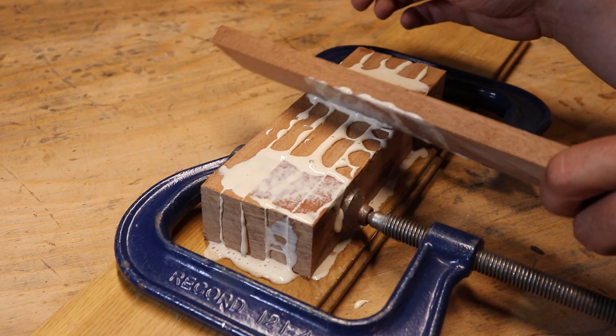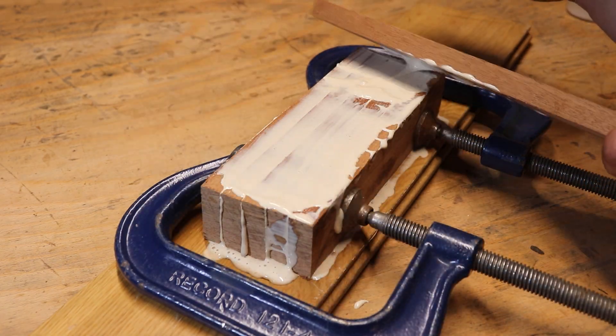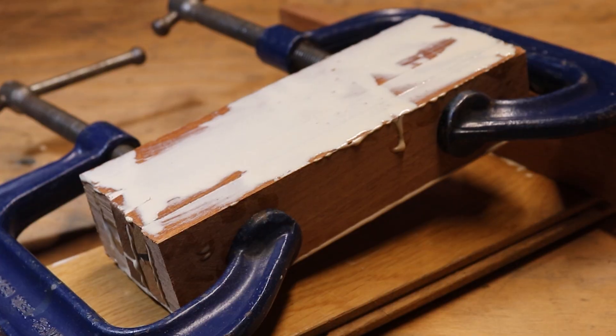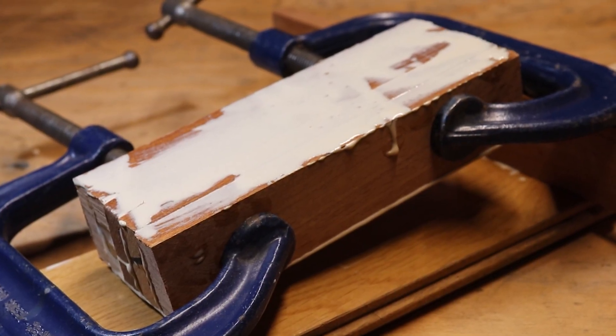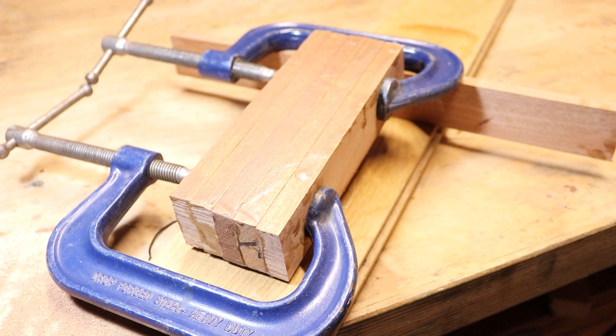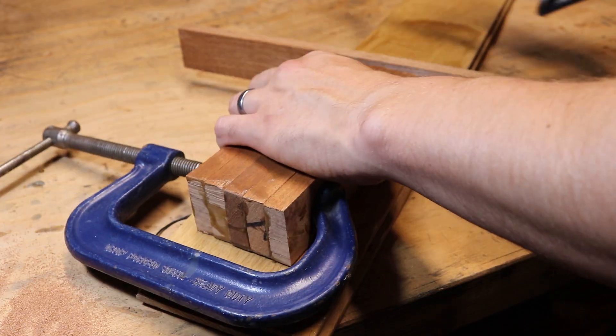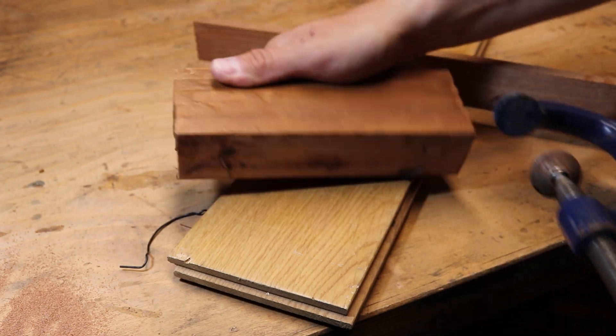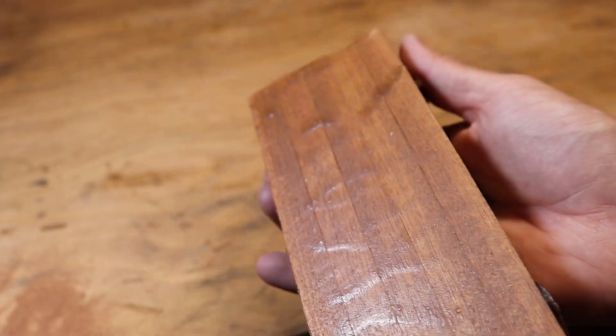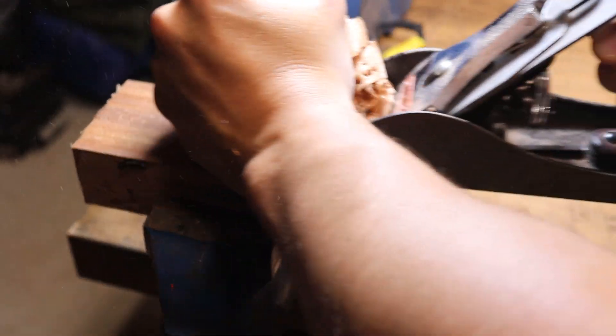To make the extension I did the exact same process that I did to make the original blank: cutting the strips, alternating the grain, and then gluing up. Once dried it was then time to remove from the clamps, remove any excess glue, and then square off before cutting.